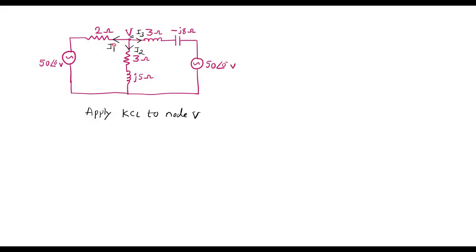So sum of I1 plus I2 plus I3 is equal to zero. I can say I1 plus I2 plus I3 is equal to zero. After applying KCL, now we need to convert these currents in terms of voltages.